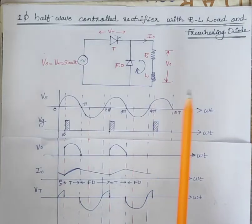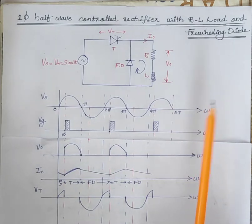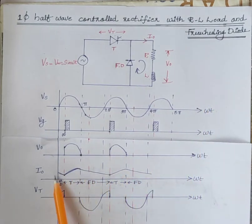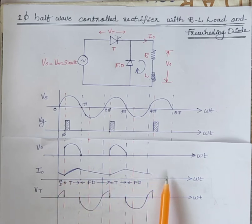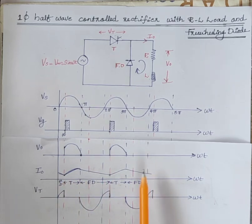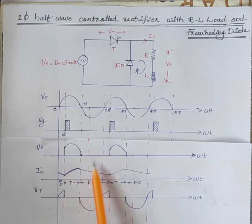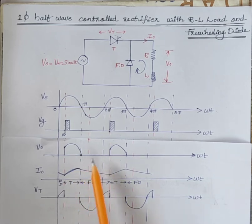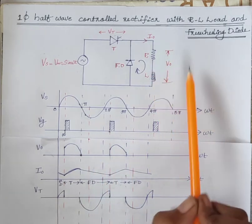So by using the freewheeling diode, we will get continuous conduction — that is, I0 is continuously flowing through the circuit. And also, we can remove the negative output voltage appearing across the load.